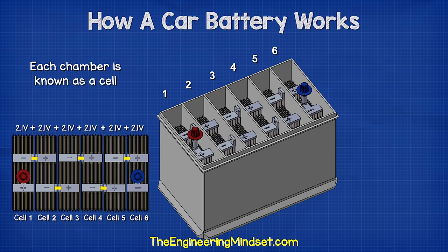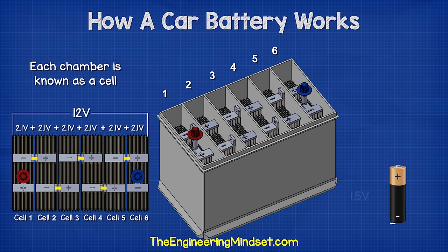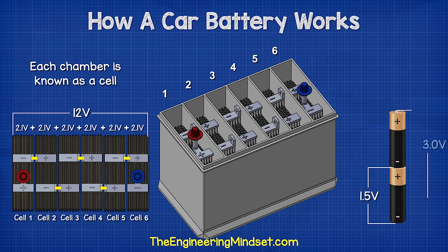Each cell is connected in series — the negative of one cell is connected to the positive of the next cell — to give us a total voltage of around 12.6 volts. It's the same as if you connected household alkaline batteries together: the voltages add together to provide a higher total voltage.